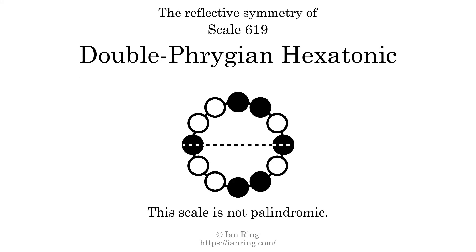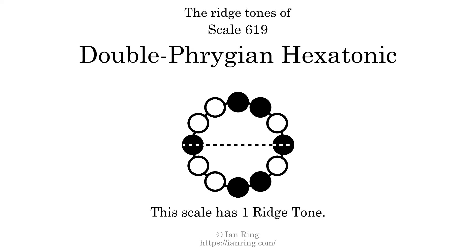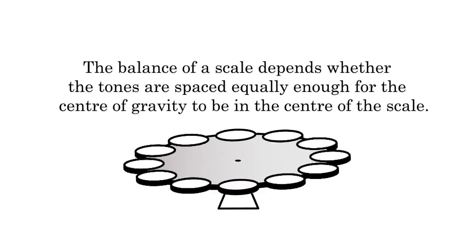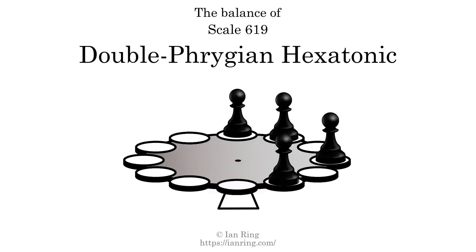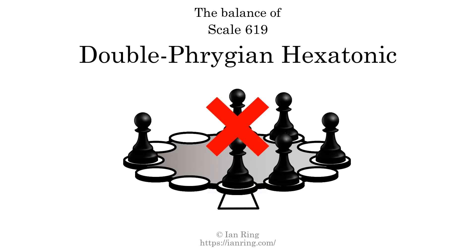This scale has reflective symmetry across an axis position three semitones from the root. This scale has a different pattern of intervals ascending and descending, so it is not palindromic. This scale has one ridge tone. The balance of a scale depends on whether the tones are spaced equally enough for the center of gravity to be in the center of the scale. This scale is not balanced.